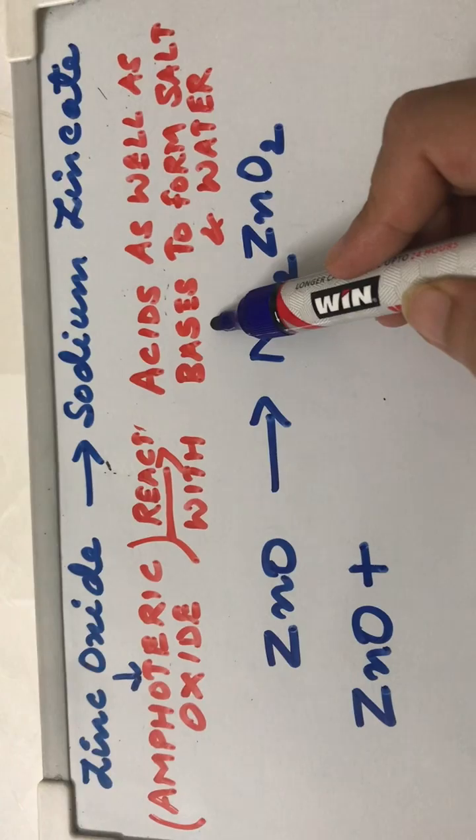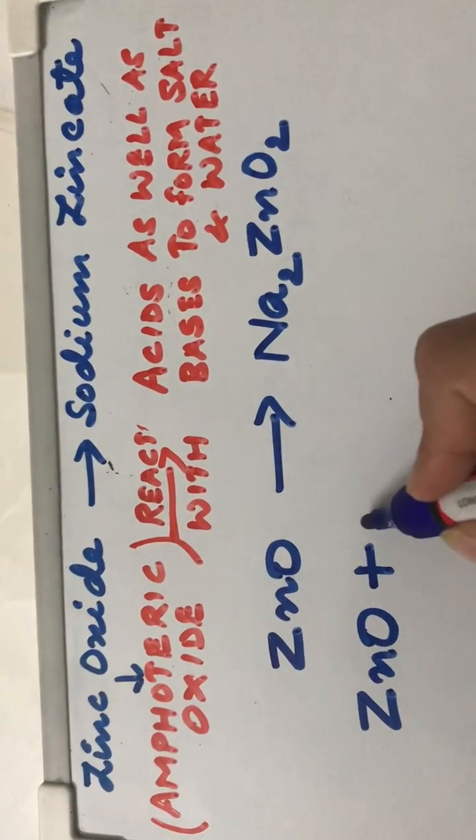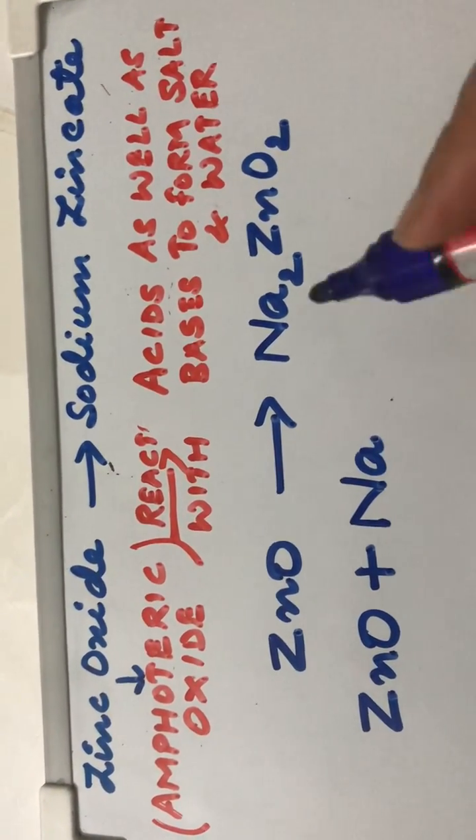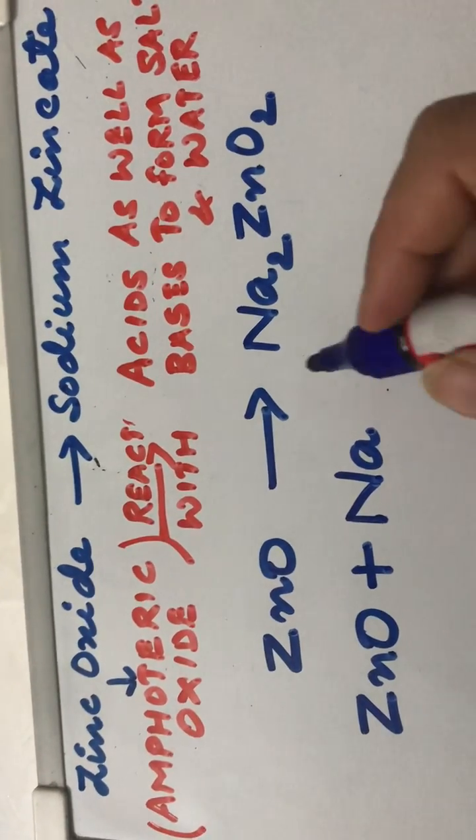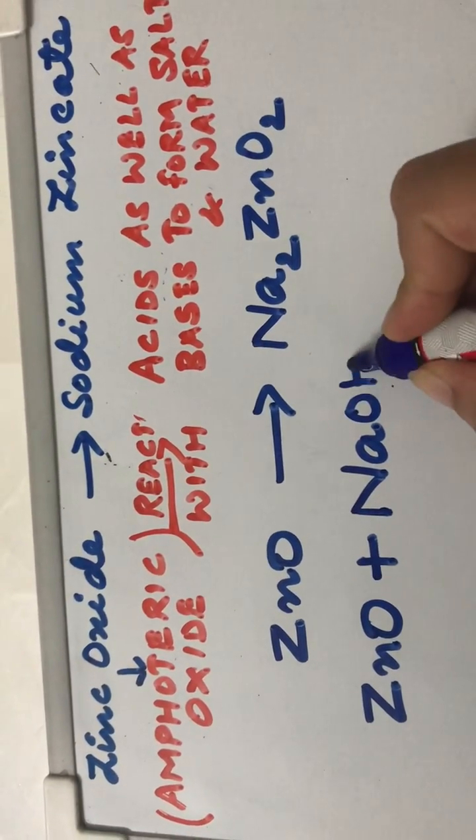And we have just learned that it can react with bases to form salt and water. That means that can actually be a base of sodium. So we know that the base of sodium is sodium hydroxide.